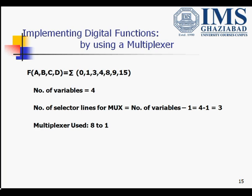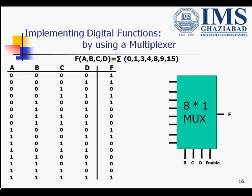Now let's look at another example with four variables. Four variables means we require 4 minus 1, that is three selector lines. Three selector lines are used in an 8-to-1 multiplexer. We have four variables with 16 possible combinations, and variables b, c, and d behave as the selector lines for one of the eight inputs.